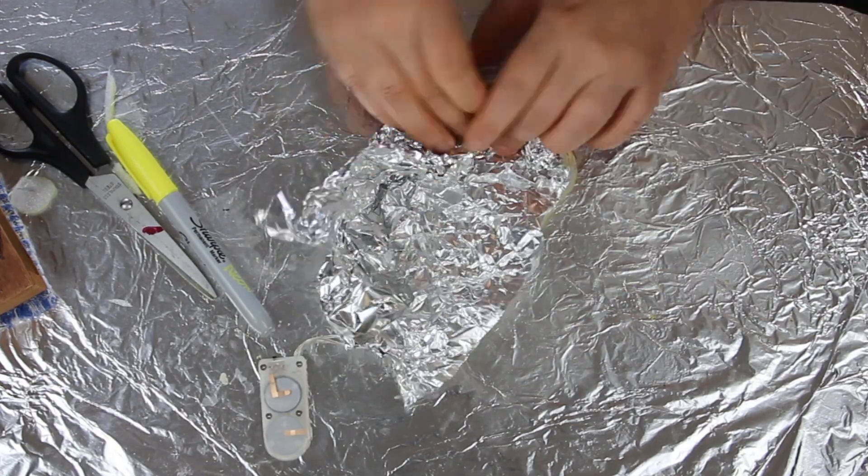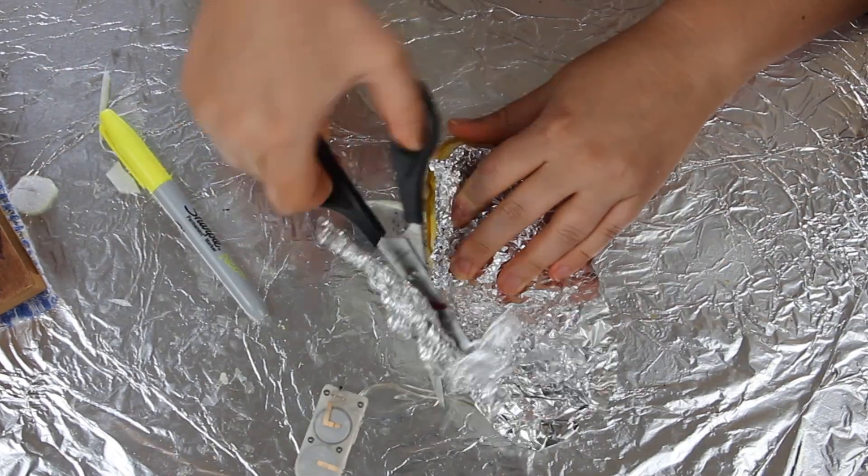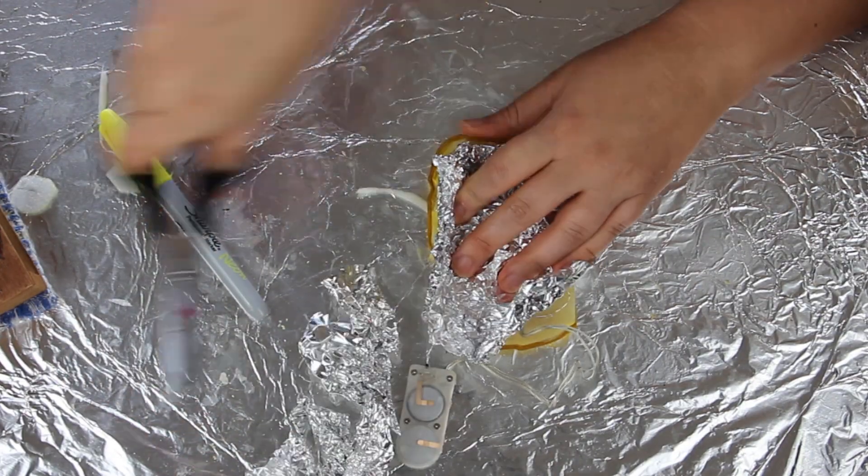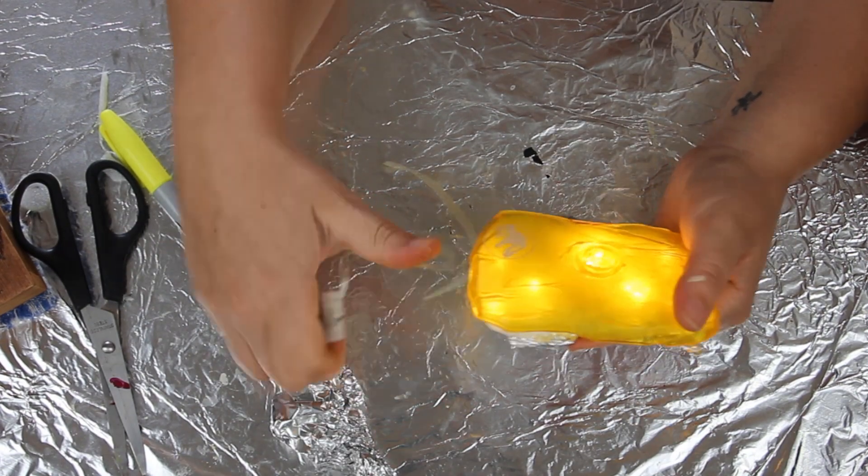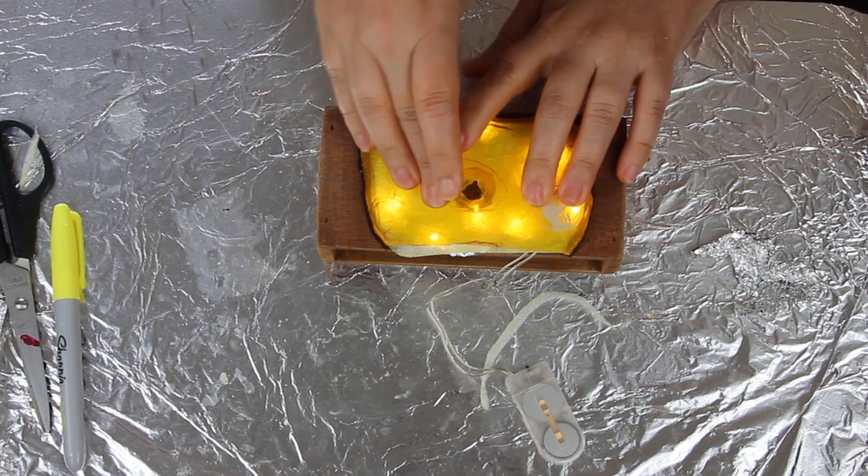Then I'm using tin foil as a backing just to help the lights reflect even more, and now I'm gluing it down.